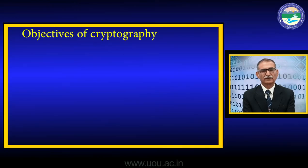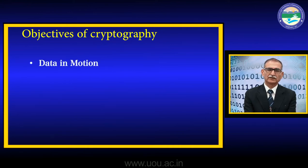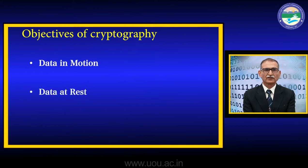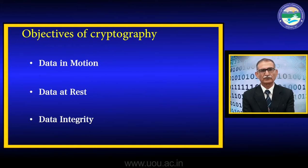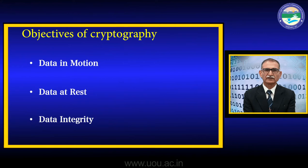Objectives of cryptography — data ko hum teen tarike se consider karte hai: data in motion, data at rest, and data integrity. When we say data in motion, it means data is either travelling on a network, or data is moving from one media to another, being copied. Data at rest means data is stored in one place and not moving. Data integrity means whether the data that we moved from one place to another has arrived in original form or not.